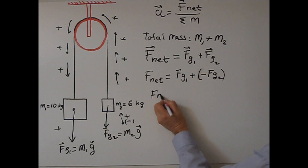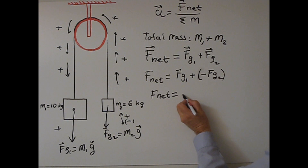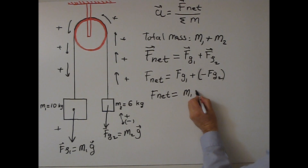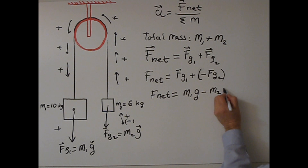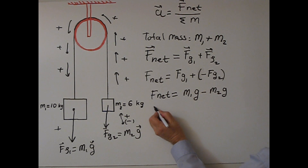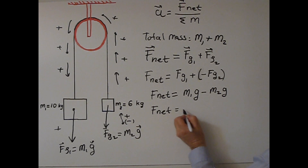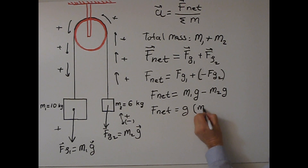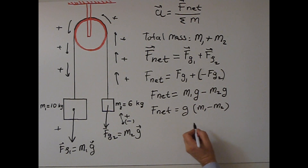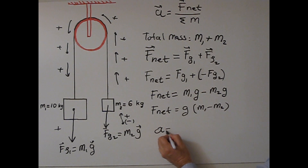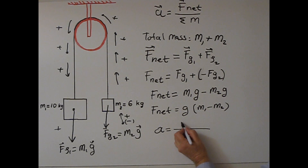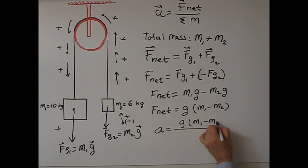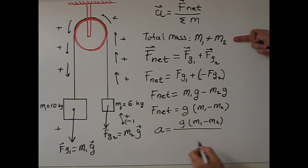So F net will be M1G minus M2G. Or, factoring G out, F net equals G times (M1 minus M2). Therefore, the magnitude of acceleration is F net over total mass, which gives G times (M1 minus M2) over (M1 plus M2).